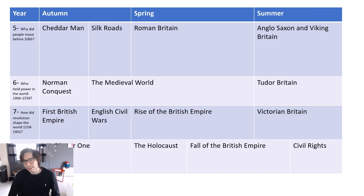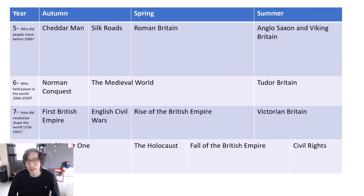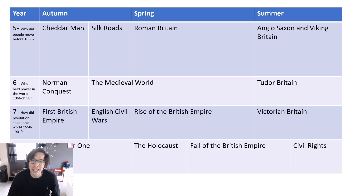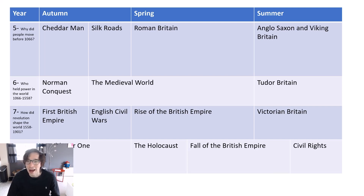Finally, to finish off year seven in the summer, we'll be looking at Victorian Britain — previously a year six topic, now a year seven topic. We'll be looking at the impact of things like the industrial revolution, riots in Victorian Britain, and the lives of people living in Victorian towns and cities.